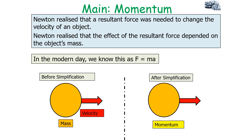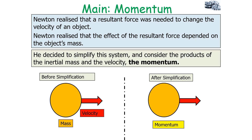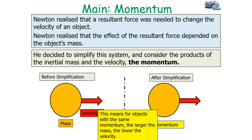Isaac Newton realised that a resultant force was needed to change the velocity of an object, and that the effect of the resultant force depended on the object's mass. In the modern day we know this as Newton's second law: F = ma. It's better to use the term inertial mass because the mass is given by the inertia of the object. Newton considered the product of inertial mass and velocity as the momentum, so for objects with the same momentum the larger the inertial mass the lower the velocity, and vice versa.